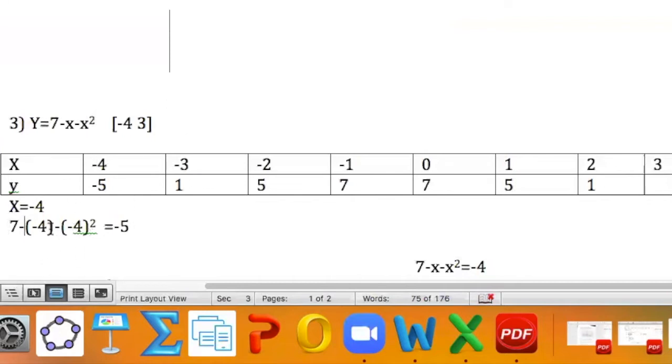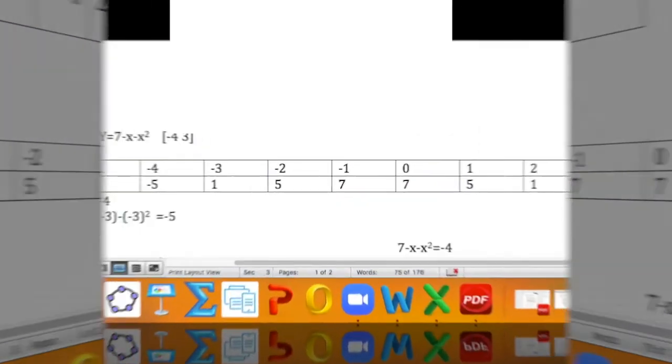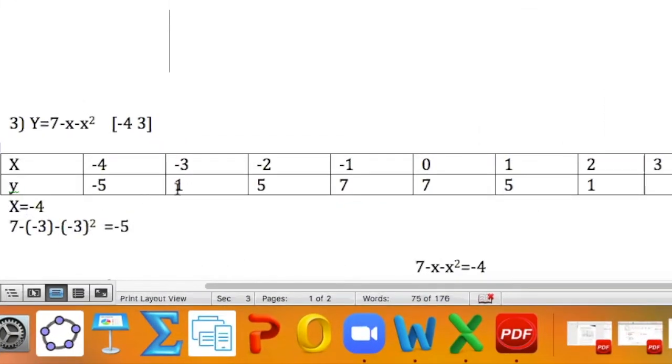Now, if you put this in your calculator, just as is, you should be getting the same values. Then you replace it with negative 3, just as you see I have it. You could enter it in your calculator, you'll get 1.